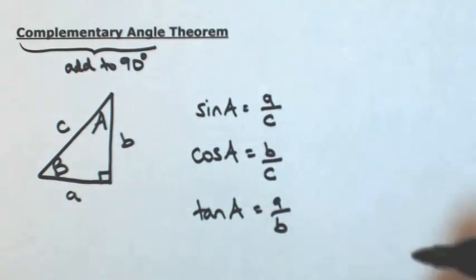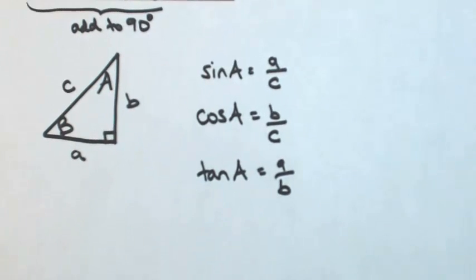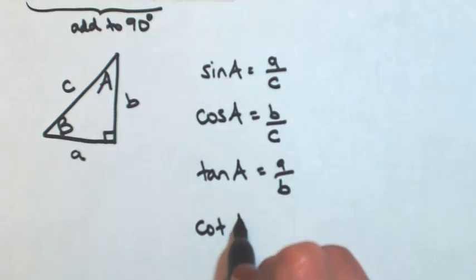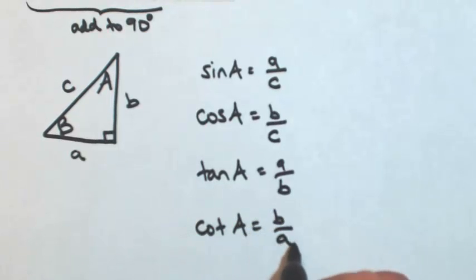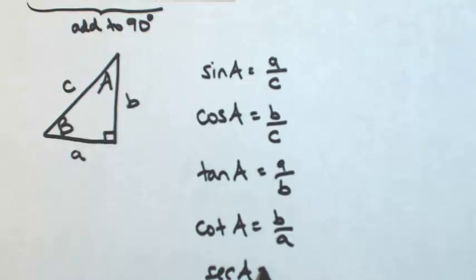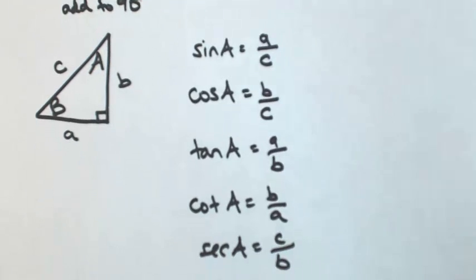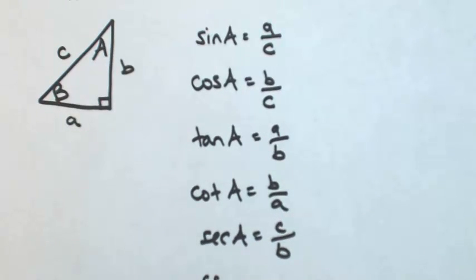You want to know these three, then just take the reciprocals. So then the cotangent of angle A, B over A, secant of angle A, C over B, and then the cosecant of angle A, C over A.